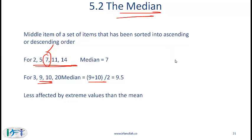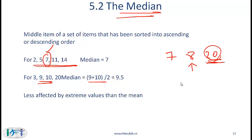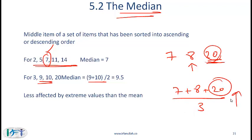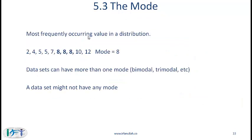To give a simple example: if you have the numbers 7, 8, and 20 — where 20 looks like an extreme value — the median is 8, not overly impacted by the 20. But 20 will have a major impact on the mean because the mean is 7 plus 8 plus 20 divided by 3. The mode is simply the most frequently occurring value in a distribution. Datasets can be bimodal if there are two modes, trimodal if there are three, and it is also possible a dataset might not have any mode.